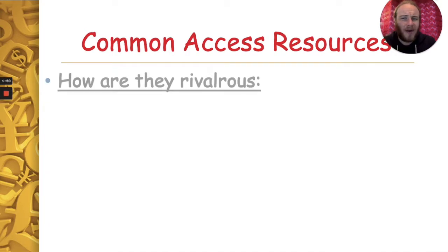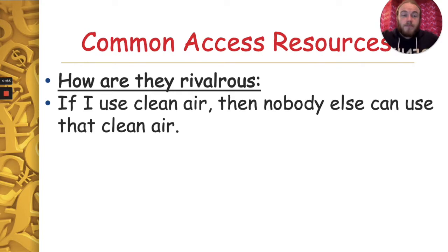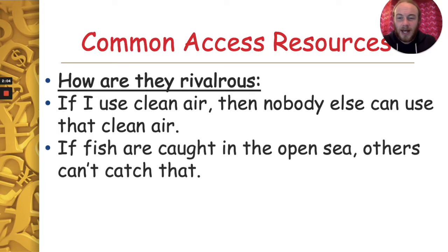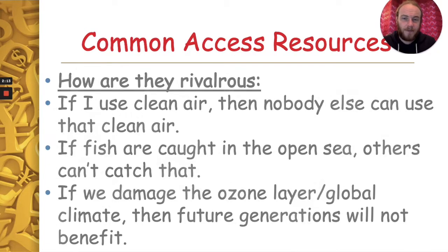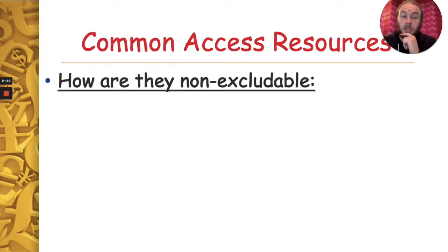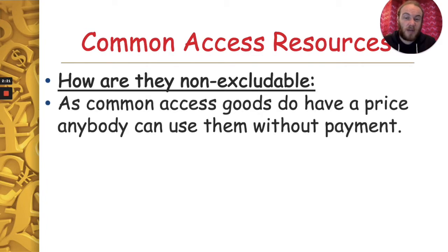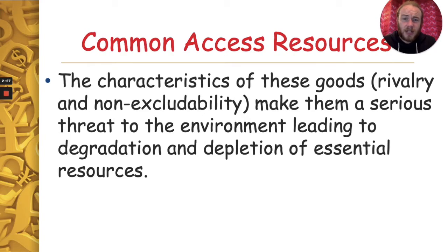How are common access goods rivalrous? If I use clean air to breathe, nobody else can use that same clean air. If fish are caught in the open sea, others can't catch those same fish. If we damage the ozone layer, future generations can't benefit from it. And how are they non-excludable? Because common access goods don't have a price, anyone can use them without payment — so they're non-excludable.